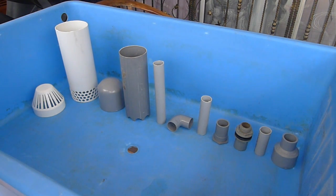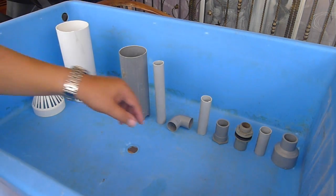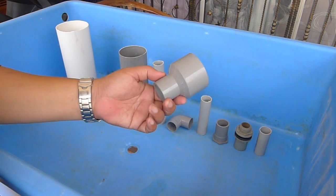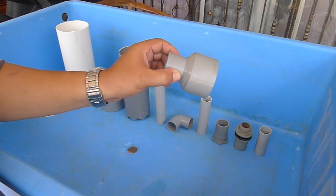And what you have in front here are all the components to make the simple bell siphon. Let me just walk through the components involved. From the extreme right, this is the reducer that I normally use.